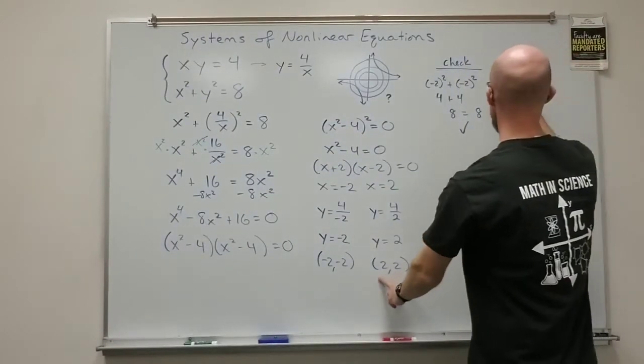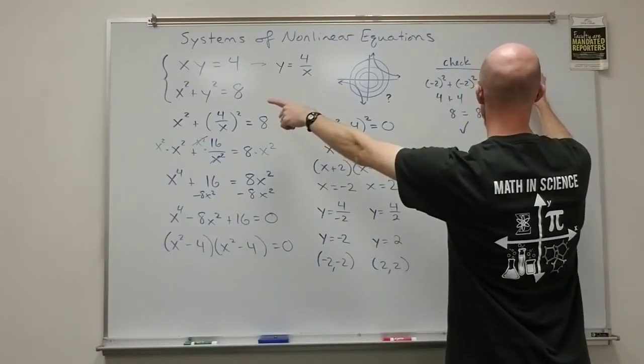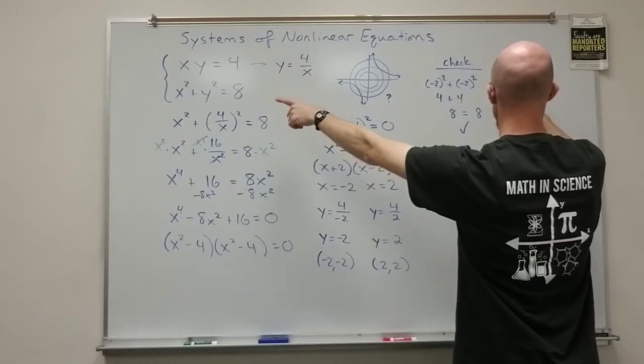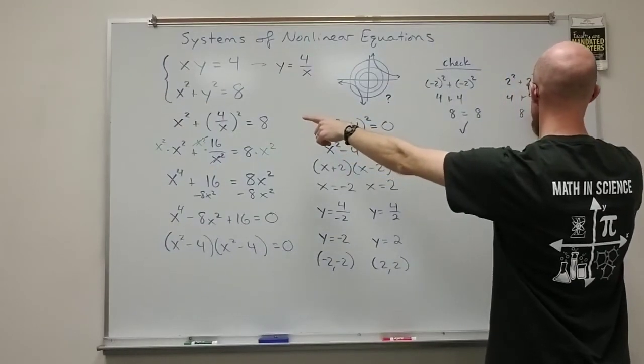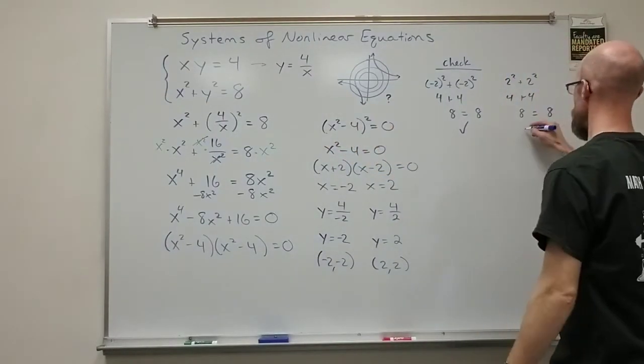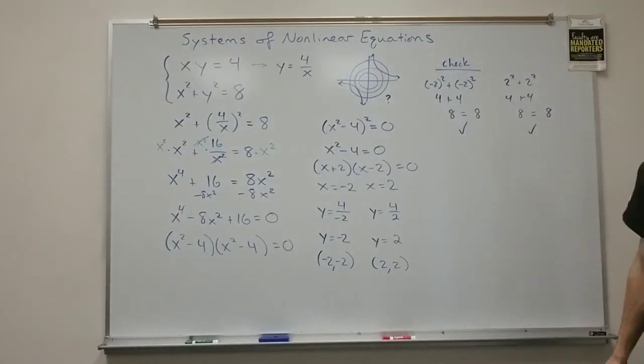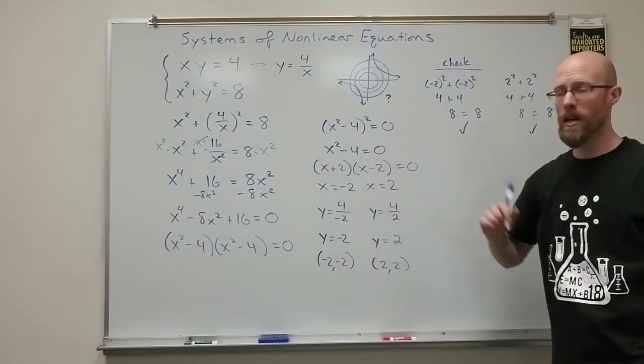The other equation, or the other point, if I plug that in, 2 squared plus 2 squared, well, that's obviously 4 plus 4, which is 8. That equals also the 8 on the other side. So, that one checks out. Both points check on both equations then.